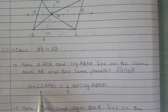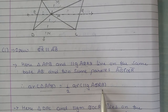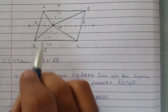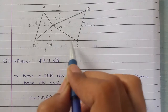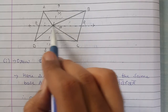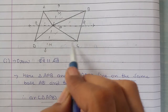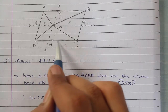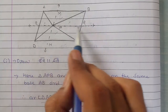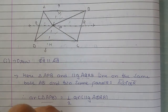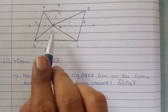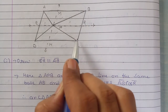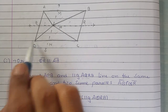That's what we have written — APB ka area AQRB se half hoga. Got the fact? Isi tarah se, yahan pe hamare paas triangle hai PDC, aur yahan pe hai QR parallel to CD. Yani PDC aur QDCR, dono figures same base CD ke upar hain, aur dono parallel lines CD aur QR ke beech mein hain. That means triangle PCD ka area parallelogram QRCD ke area se half hoga.